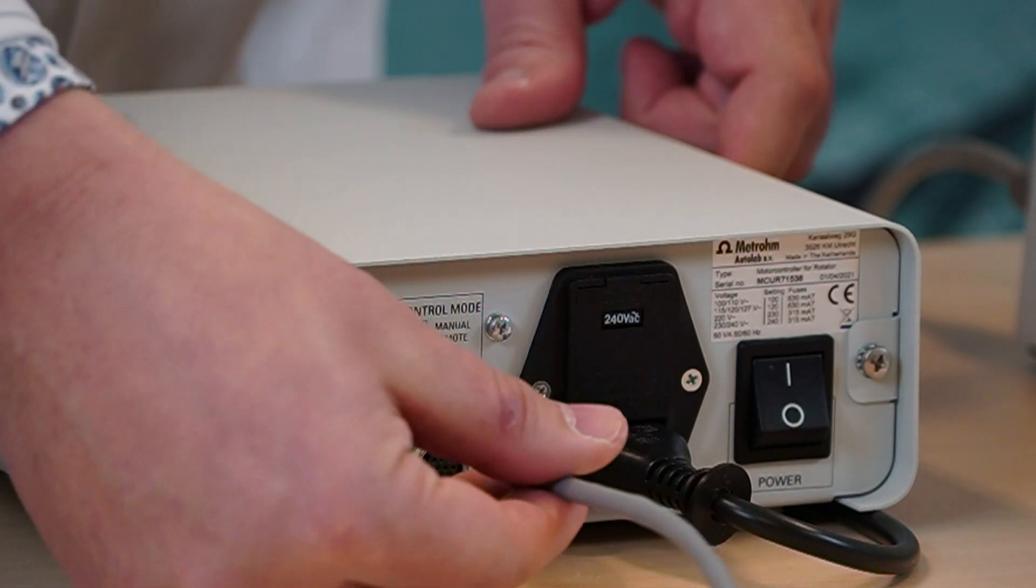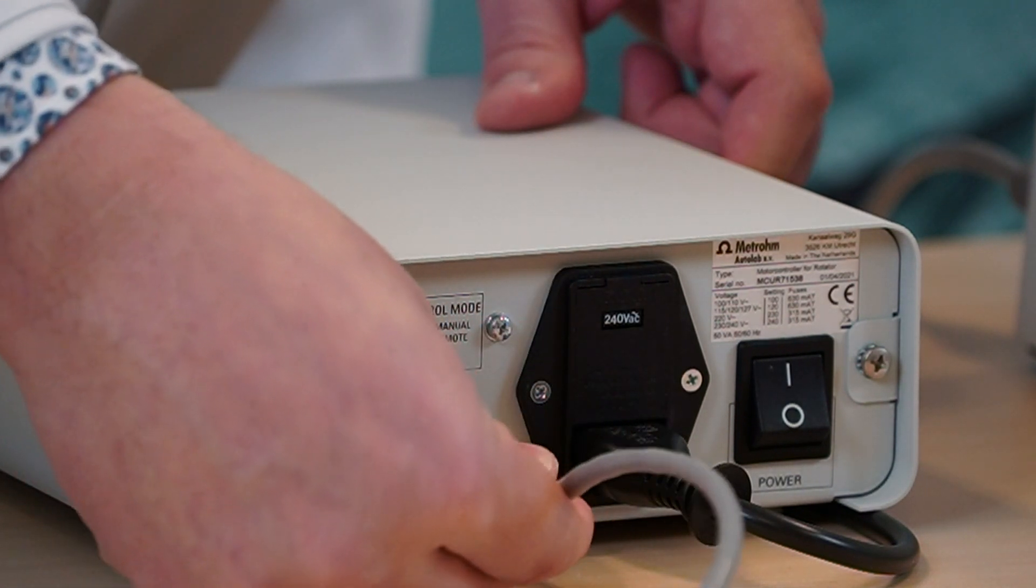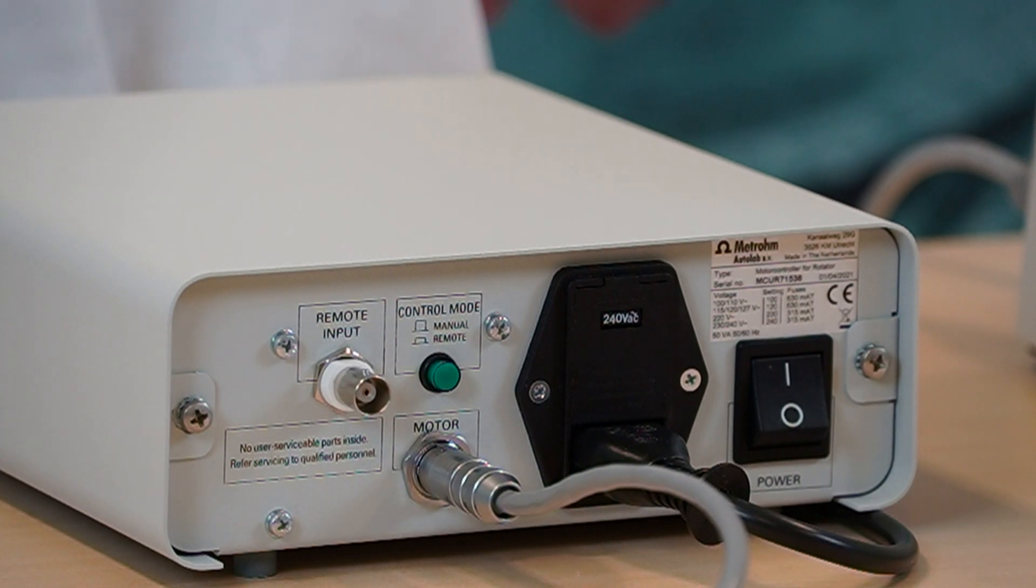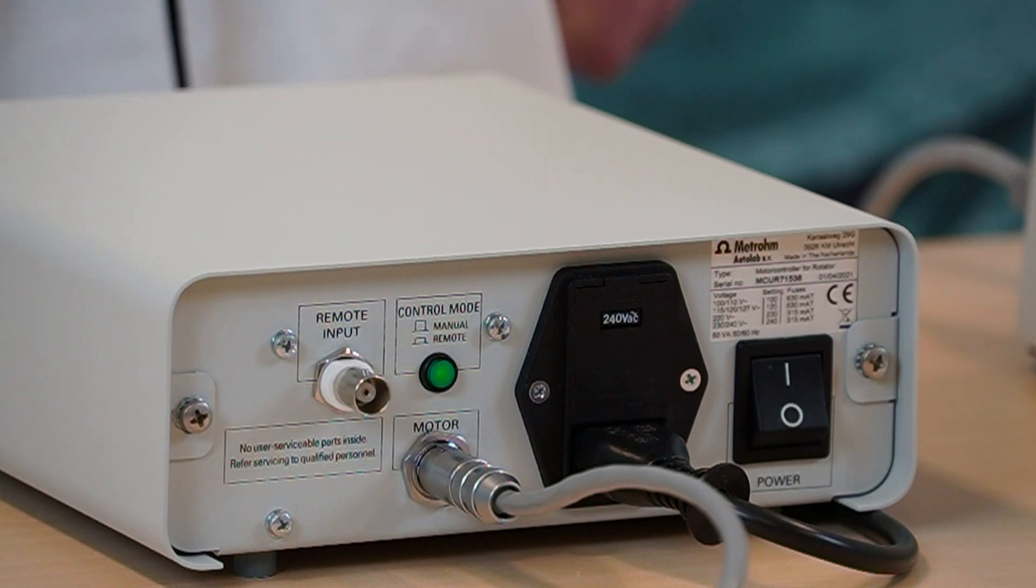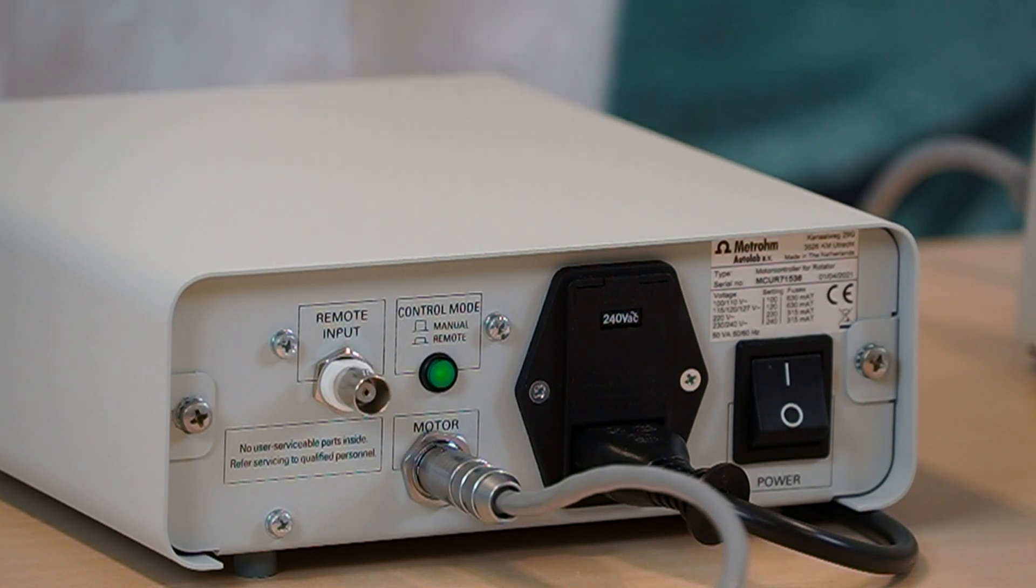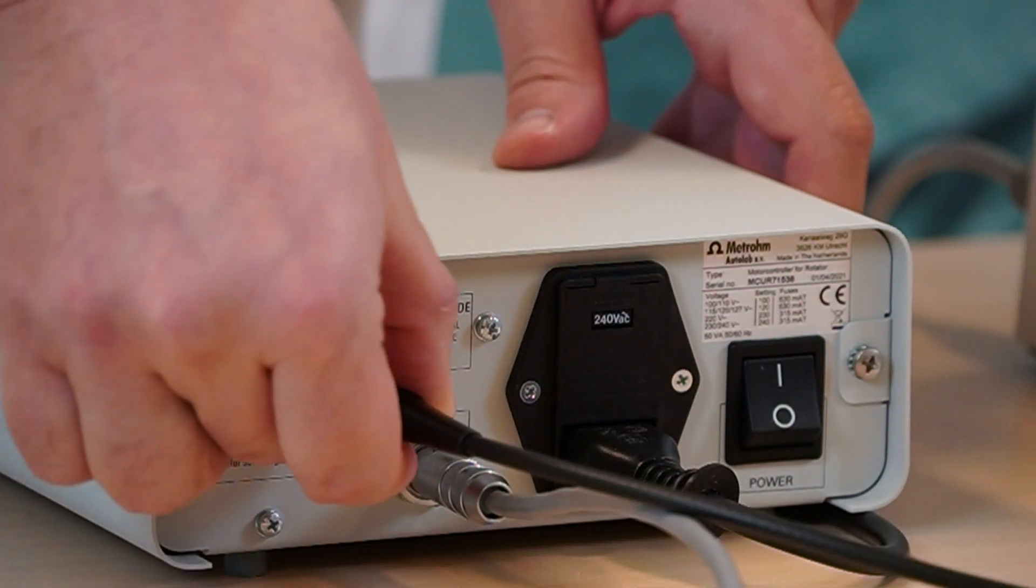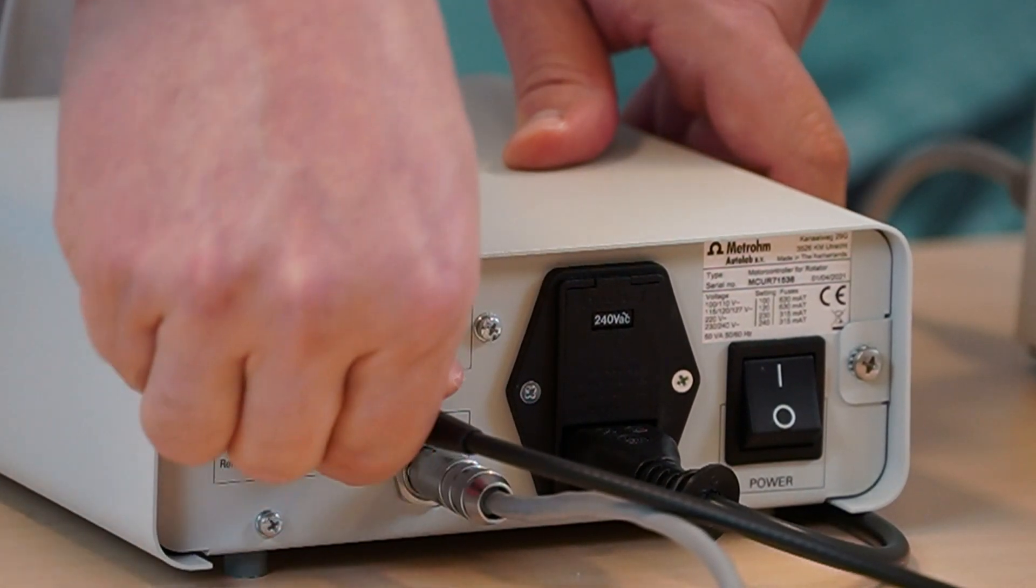Connect the rotator cable of the RDE to the motor position on the back panel of the motor controller. To control the rotation speed through the software remotely, press the control mode button on the back panel of the motor controller. Connect the BNC cable coming from the analog output, in this case the V-out of the monitor cable of the PGZ204, to the remote input on the back panel of the motor controller.